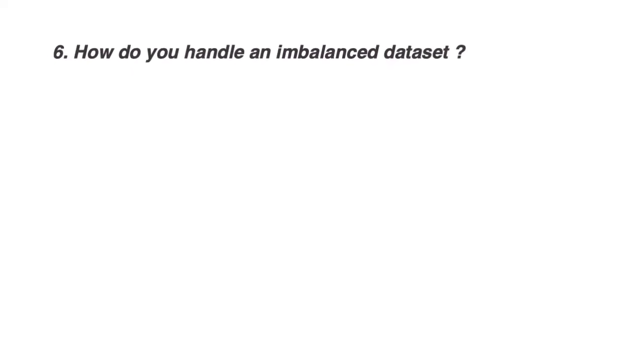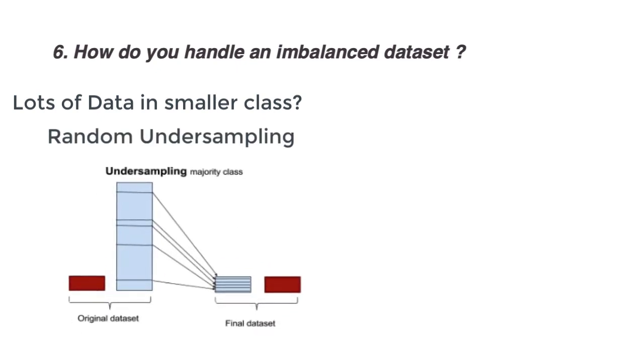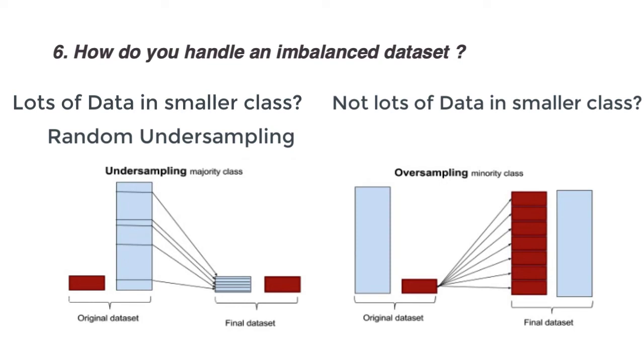How would you handle an imbalanced dataset? If you have a lot of data to work with in the underrepresented class, then we can try random undersampling. This involves getting rid of the over-represented class samples from the training data. You don't have to target a perfect 1 to 1 ratio, but something close should work just fine. If you don't have too much data to work with, we can perform random oversampling. Take the underrepresented class and sample with replacement until we get the required ratio.